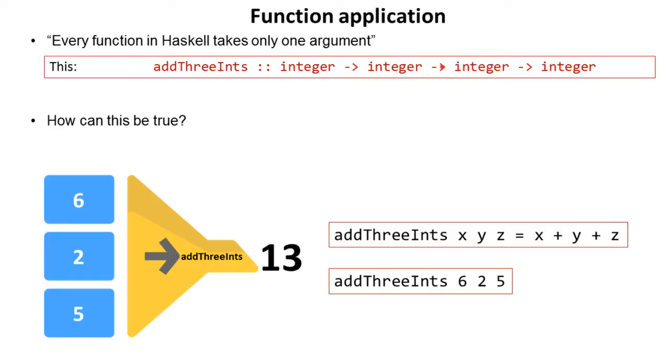I can see it here in the function declaration and I can see it here—we pass it three integers and it produces an integer. So how on earth can this statement be true? Well let's have a look because this is really important to understand.